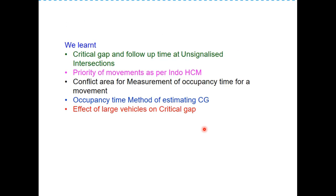In this session we have learned what is critical gap and follow-up time at unsignalized intersections, what is the priority of movement as per Indo-Highway Capacity Manual and how it differs from US Highway Capacity Manual, what is the conflict area at an intersection for measurement of occupancy time, the occupancy time method for estimating critical gap, and how it is adjusted for large vehicles in major street traffic. Thank you very much for watching this video. If you liked it, please share, and if you want to suggest any topic to be covered, please write in the comment box.